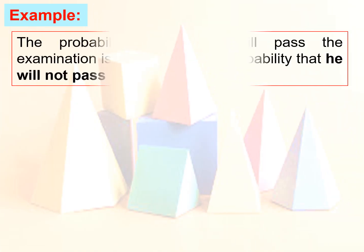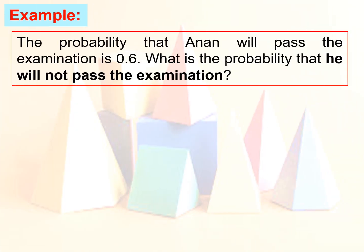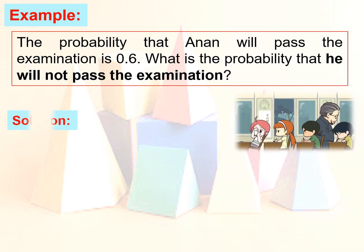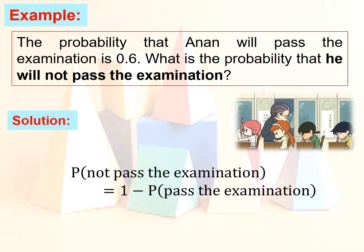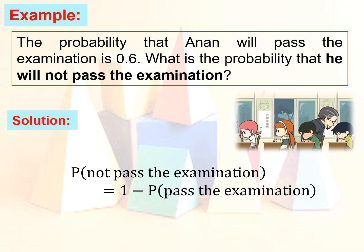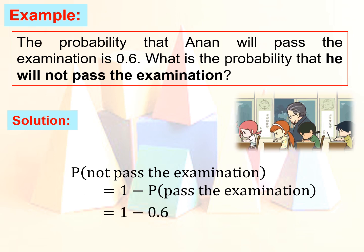The probability that Anand will pass the examination is 0.6. What is the probability that he will not pass? For this kind of problem, the probability of passing is already given. So we simply subtract 0.6 from 1. The probability that Anand will not pass the examination equals 1 minus 0.6, which is 0.4.